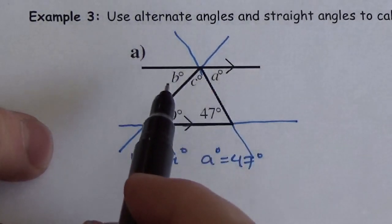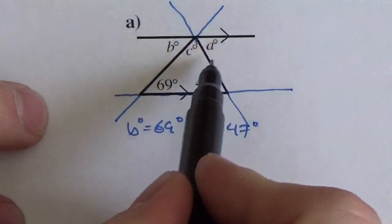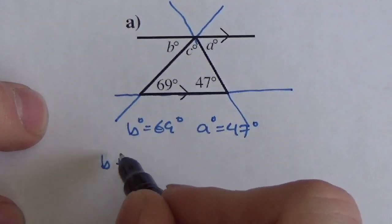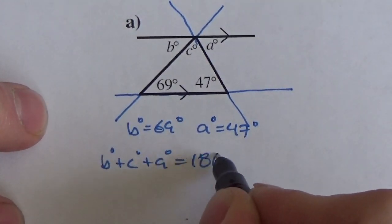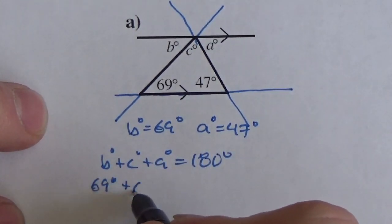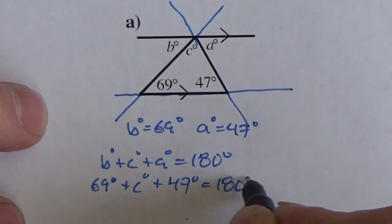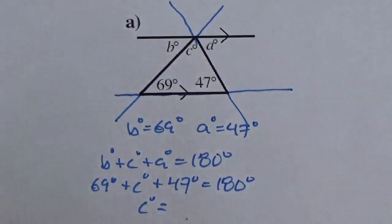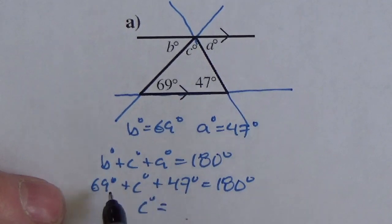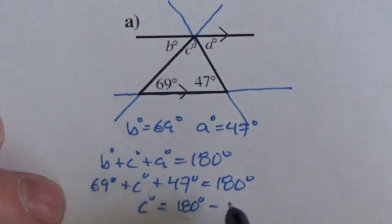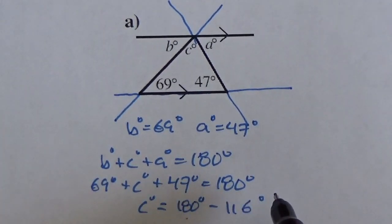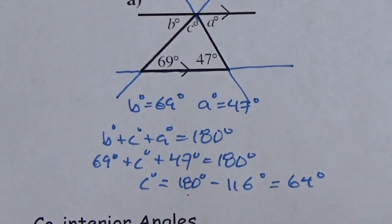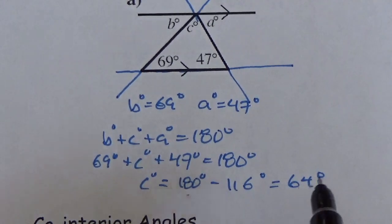Now I know that B, C, and A are forming a straight line, so B plus C plus A must be 180 degrees. That gives us 69° plus C plus 47° equals 180°. Subtracting: 69 and 47 add to 116 degrees, so C equals 180° minus 116°, which is 64 degrees. Angle C must be 64 degrees.